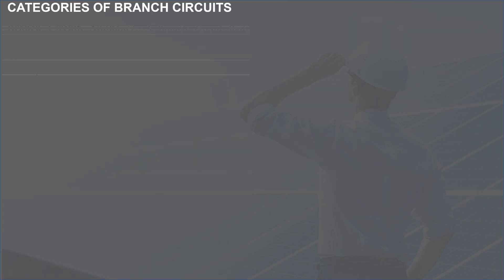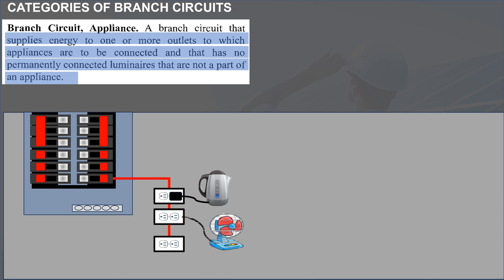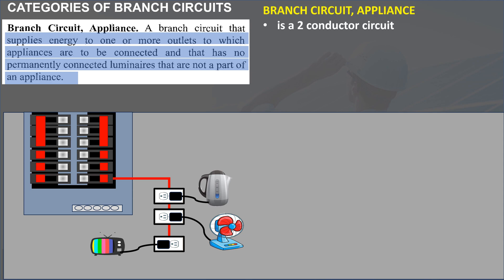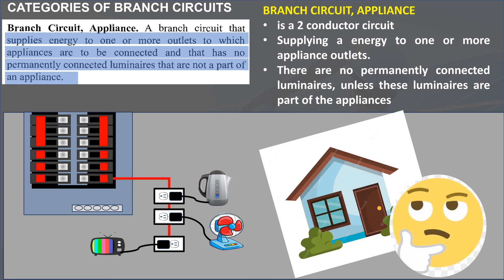The branch circuit is categorized into the following. First, branch circuit appliance: a branch circuit that supplies energy to one or more outlets to which appliances are to be connected, and that has no permanently connected luminaires that are not part of an appliance. Therefore, a branch circuit appliance is a two-conductor circuit that supplies energy to one or more small appliance outlets, with no permanently connected luminaires unless they are part of the appliances. Branch circuit appliance is an important term when designing an electrical system for dwelling units.